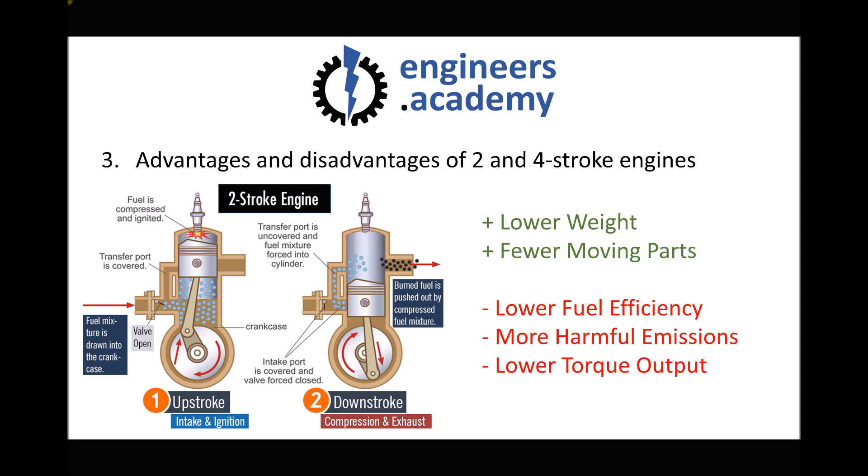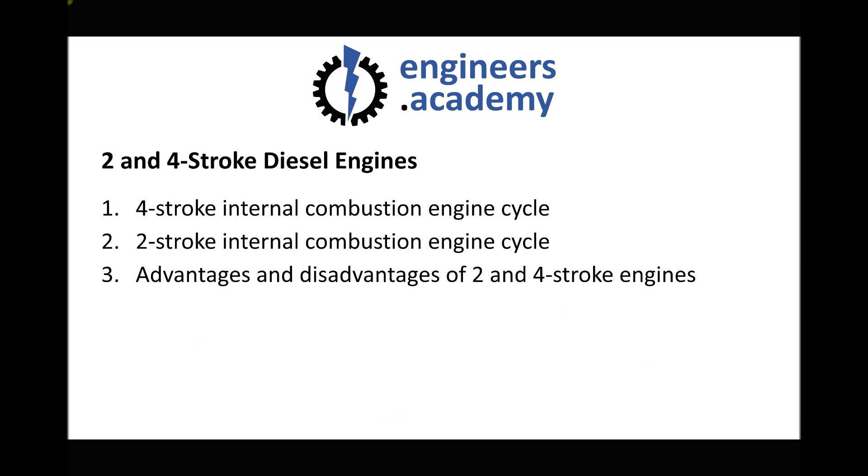Two and four stroke engines have a number of different relative advantages and disadvantages. Two stroke engines tend to be used for smaller devices such as chainsaws or go-karts, mainly because they are lighter, have fewer moving parts, and therefore have fewer things that can go wrong. Four stroke engines tend to be used in heavy lifting applications such as transport and haulage, because they produce more torque, are more fuel efficient, and produce lower emissions — an increasingly important consideration. To recap, we've reviewed the four stroke cycle, compared it to the two stroke cycle, and discussed the advantages and disadvantages of both.